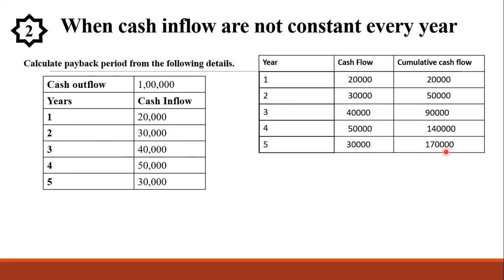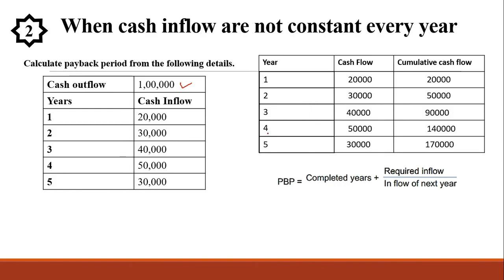So our total cumulative cash flow is 1,70,000. Now, in order to find the payback period when the cash inflow is not constant, the formula is: payback period equals completed years plus required inflow divided by inflow of next year. The cash outflow in the sum is Rs. 1,00,000. We look into the cumulative cash flow column to find in which year we recover Rs. 1,00,000. We can see that in year number 4 we recover Rs. 1,00,000, but the cumulative value goes beyond Rs. 1,00,000 in that year.